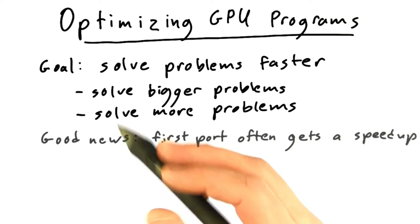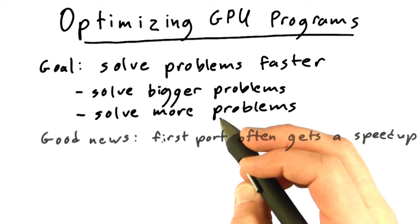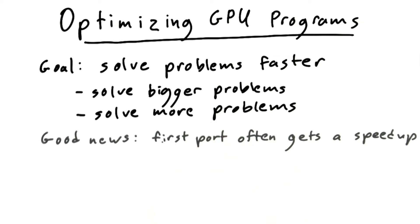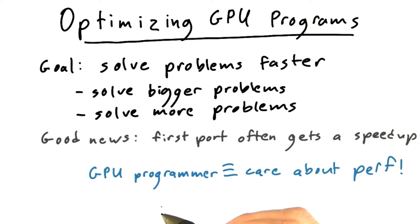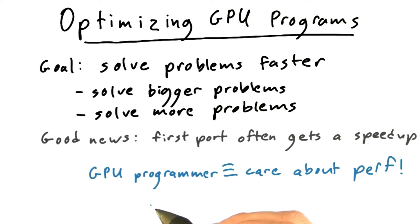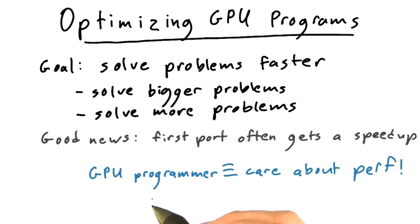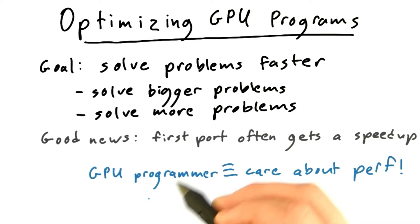And that's cool. But by definition GPU programmers care about performance — that's why they're using the GPU. That means they often want to spend additional effort to maximize the speedup beyond that first initial try. So in this unit we're going to talk about how to optimize GPU programs.